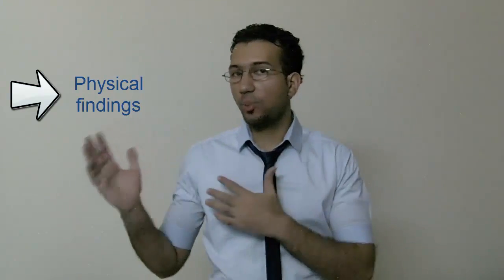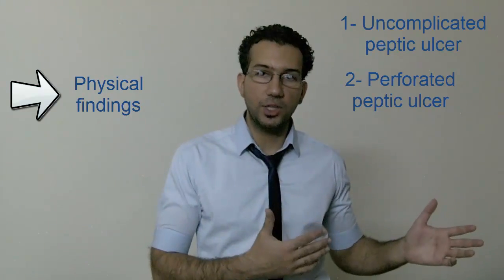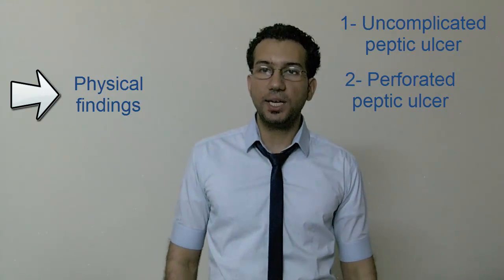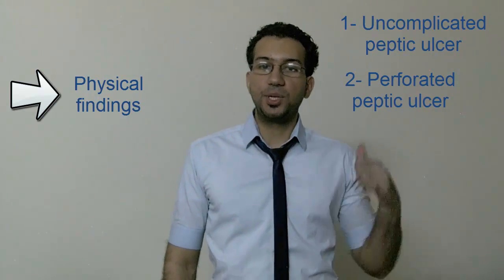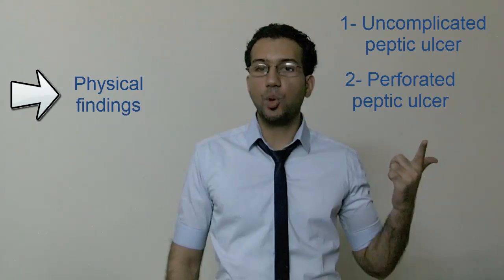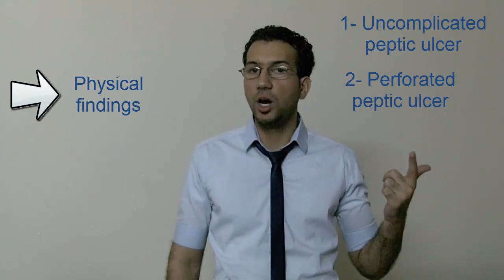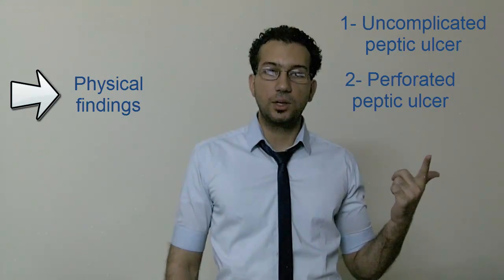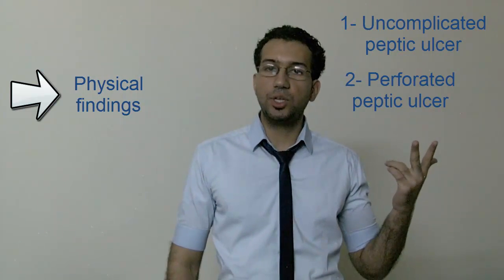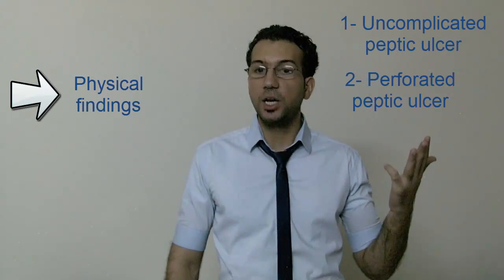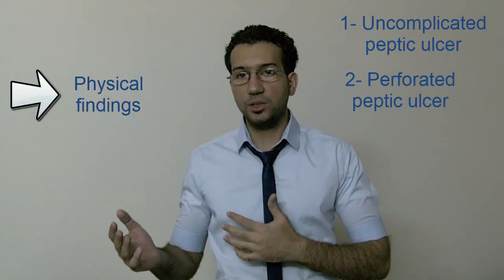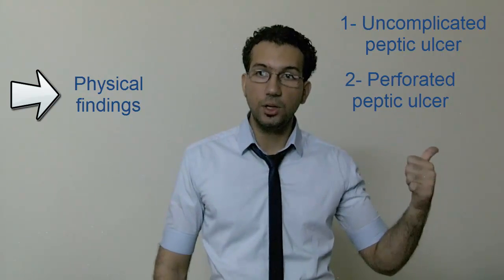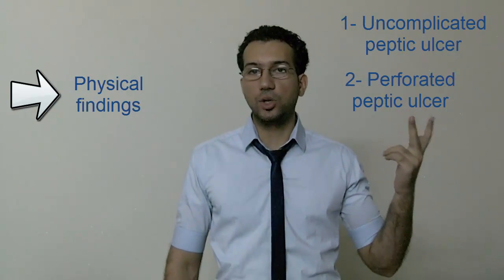Physical findings in peptic ulcer disease are discussed in terms of uncomplicated and perforated disease. In uncomplicated peptic ulcer disease, clinical findings are few and non-specific, including epigastric tenderness, right upper quadrant tenderness (which may suggest biliary etiology), melena resulting from acute or subacute gastrointestinal bleeding, and succession splash resulting from partial or complete gastric outlet obstruction. In perforated peptic ulcer disease, patients usually present with severe sharp abdominal pain of sudden onset.